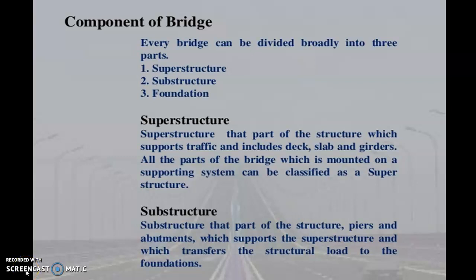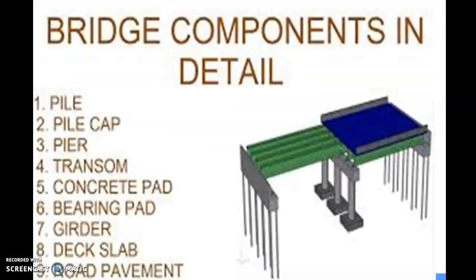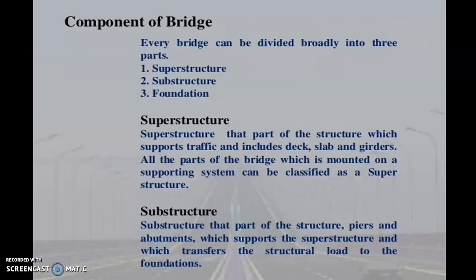In our previous slide we discussed what are the components of a bridge. Now we continue and see what are the substructure components. The substructure components contain: first, piers; second, abutments; third, wing walls; and fourth, foundations.